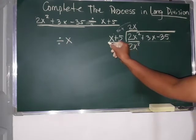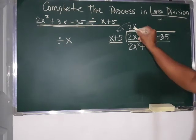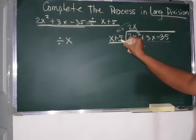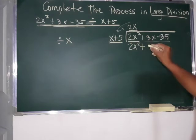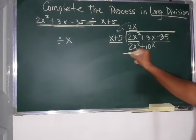Next. Lahat ng divisor. Diba? So, positive times positive. Positive. 2x times 5. Number first. 2 times 5. 10. And then, just copy x.